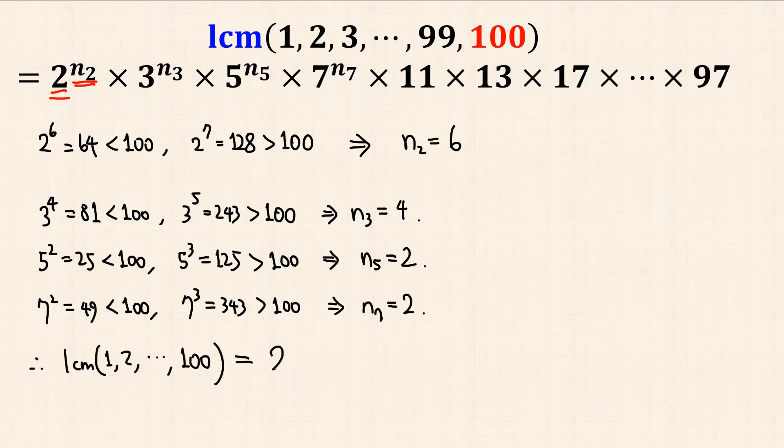Therefore, we have 2 to the power of 6 times 3 to the power of 4, 5 to the power of 2, which means 5 squared, and 7 squared, then 11 times 13 times 17 times 97.